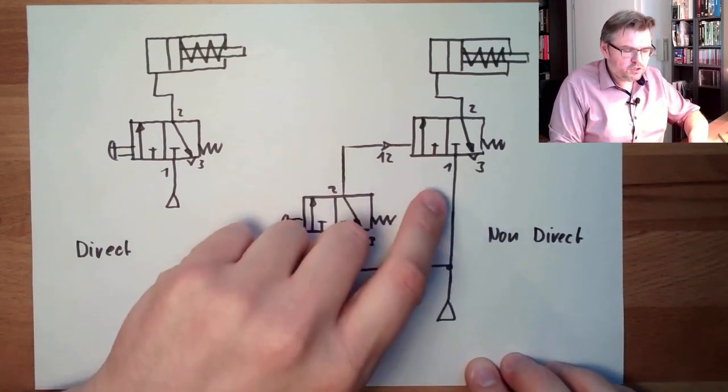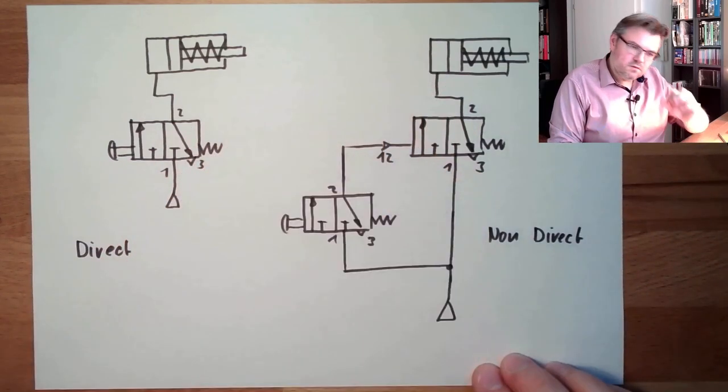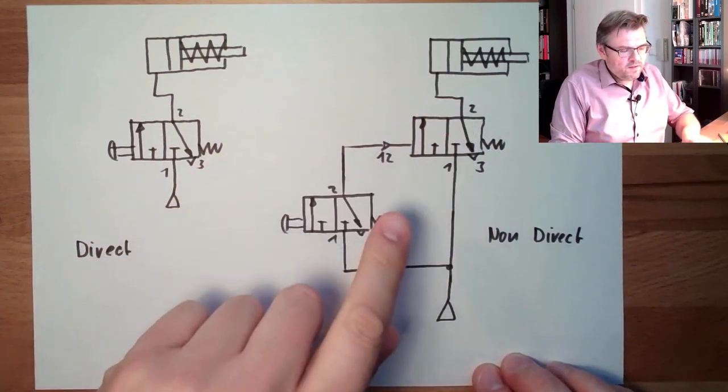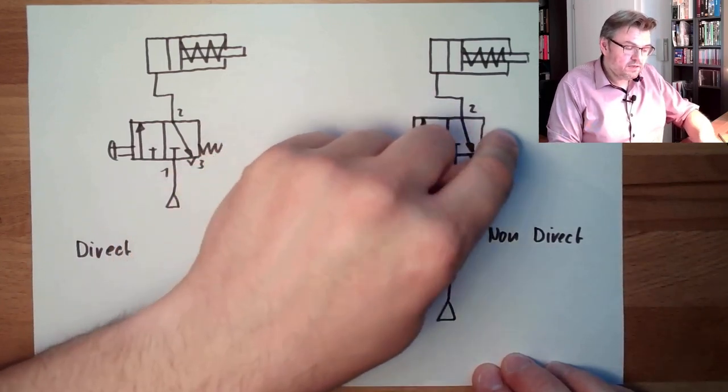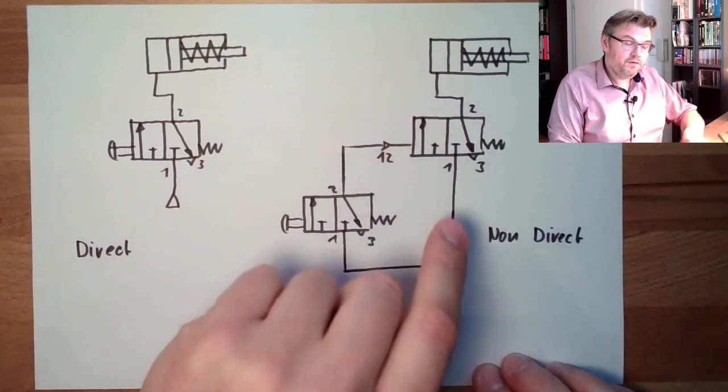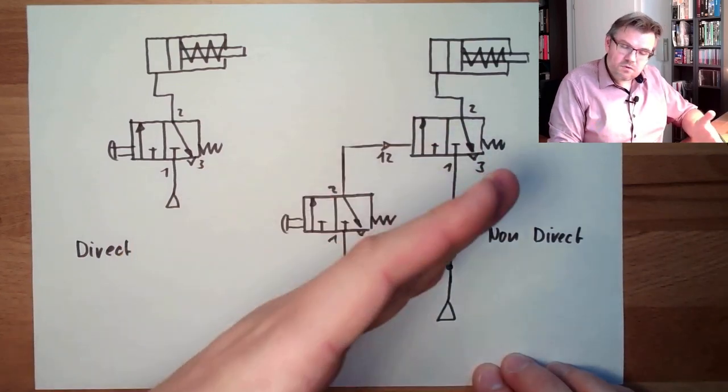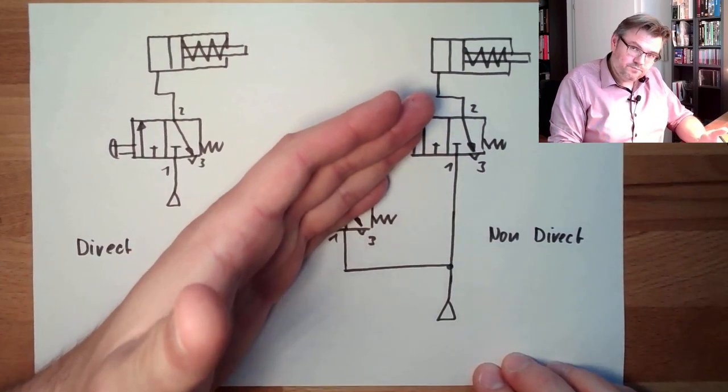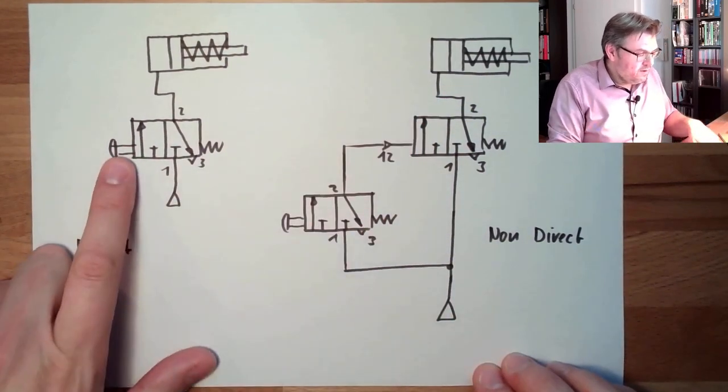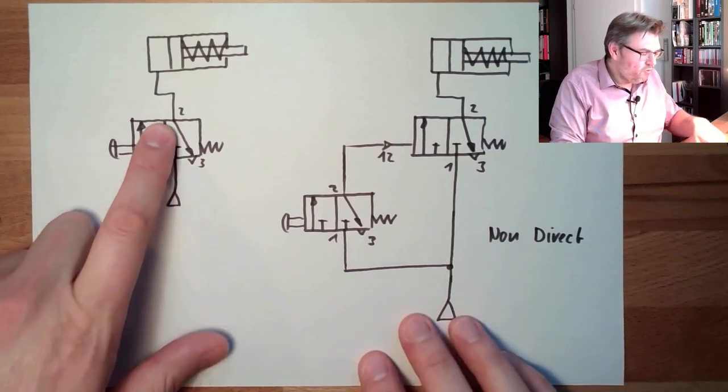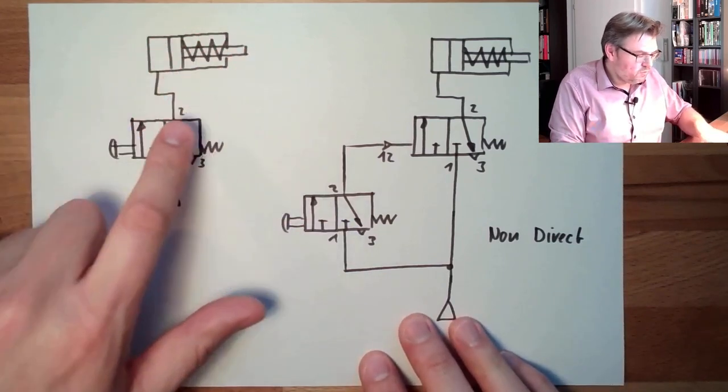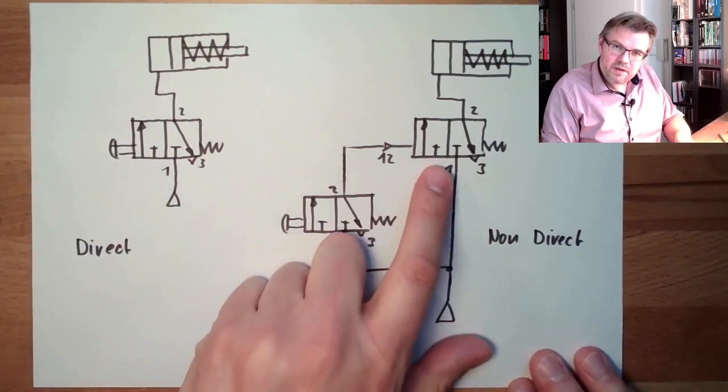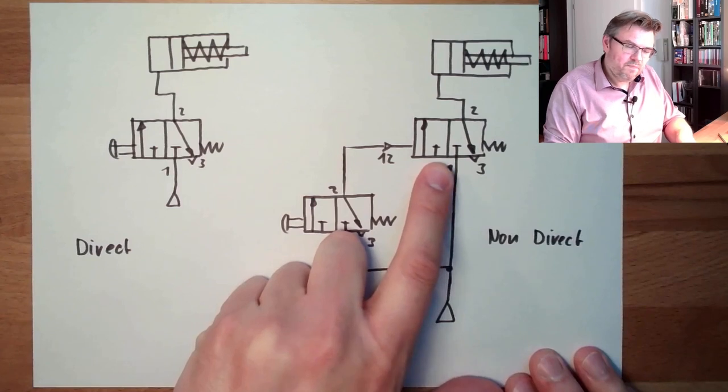So we need to switch a reasonable sized tube, hose, whatever is connected here. To switch a reasonable sized tube I need a reasonable sized valve. A reasonable sized valve does have other operating forces and so on, needs more power. So here this is not that easy. This can only be done at rather small cylinders and rather small forces.